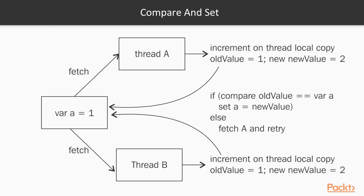Here is an example. We have Thread A and Thread B, and a shared variable A equal to 1. Both Thread A and Thread B want to increment that value. Thread A fetches variable A and increments its local copy — old value is 1, new value is 2. Thread B does the same: old value is 1, new value is 2. The first thread to win compares: if the old value is still equal to variable A, it sets A to the new value — so A becomes 2. Otherwise it fetches A again and retries the whole operation.